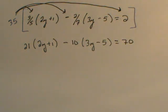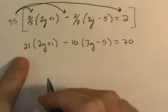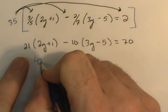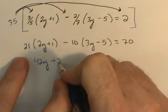In my next step, what I'll do is go ahead and distribute these leading terms. So 21 times 2y produces 42y. 21 times 1 is going to be plus 21.